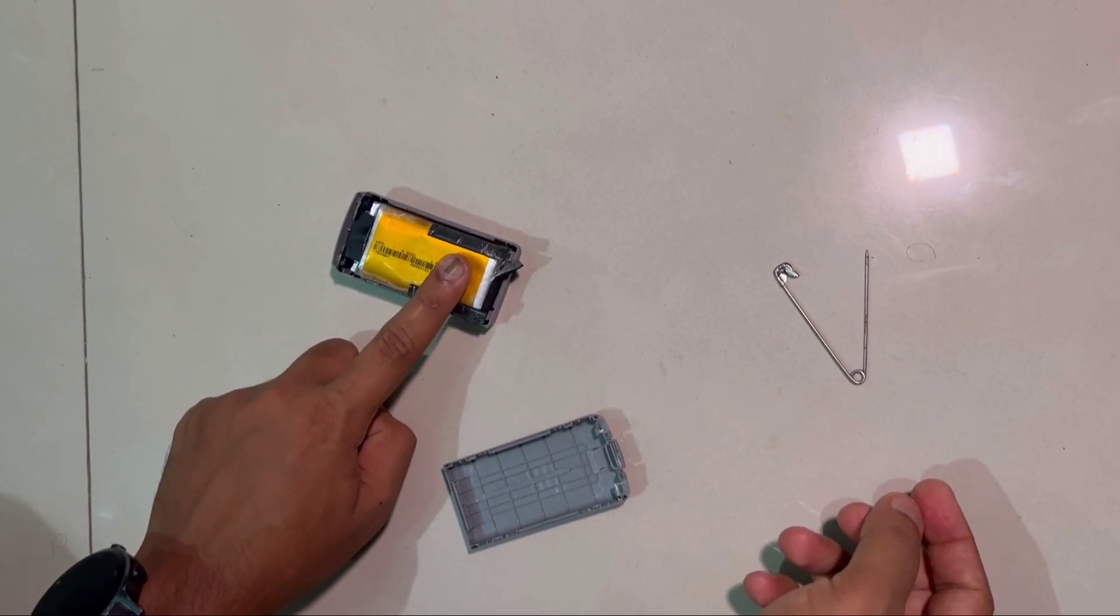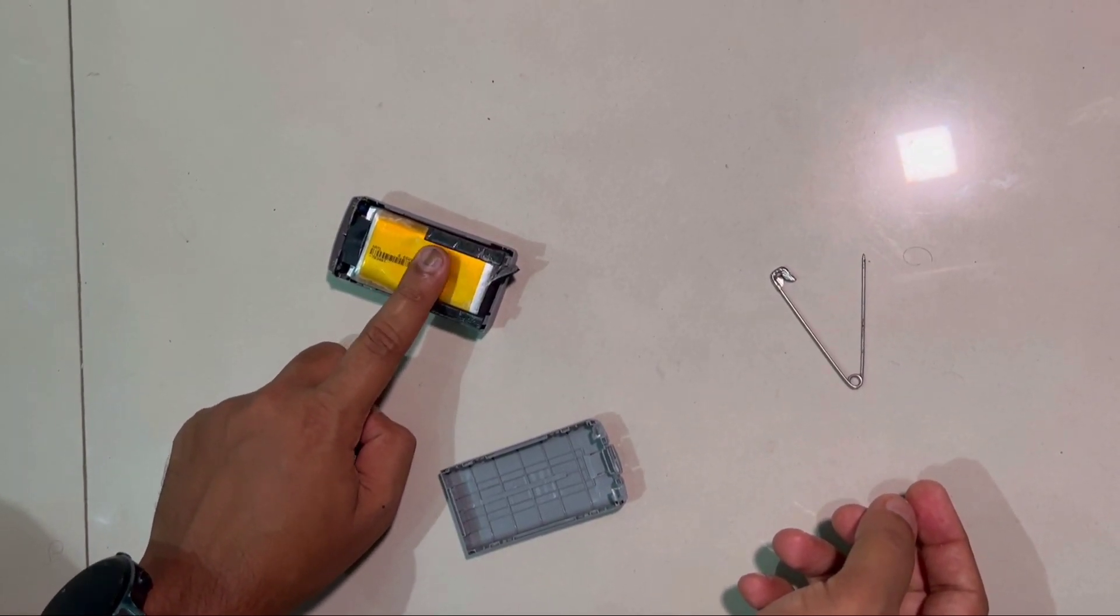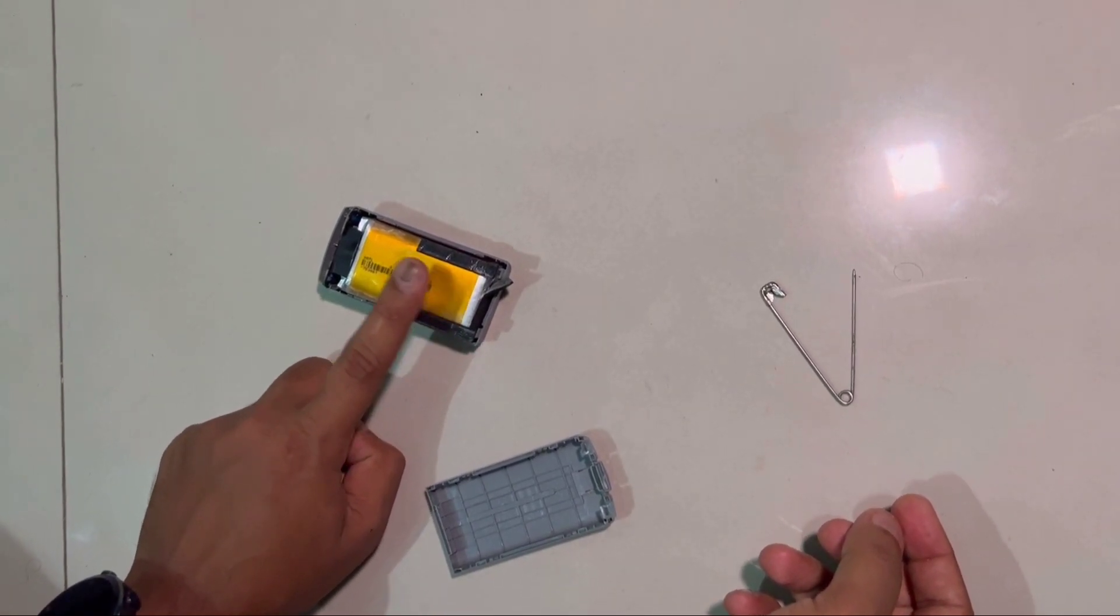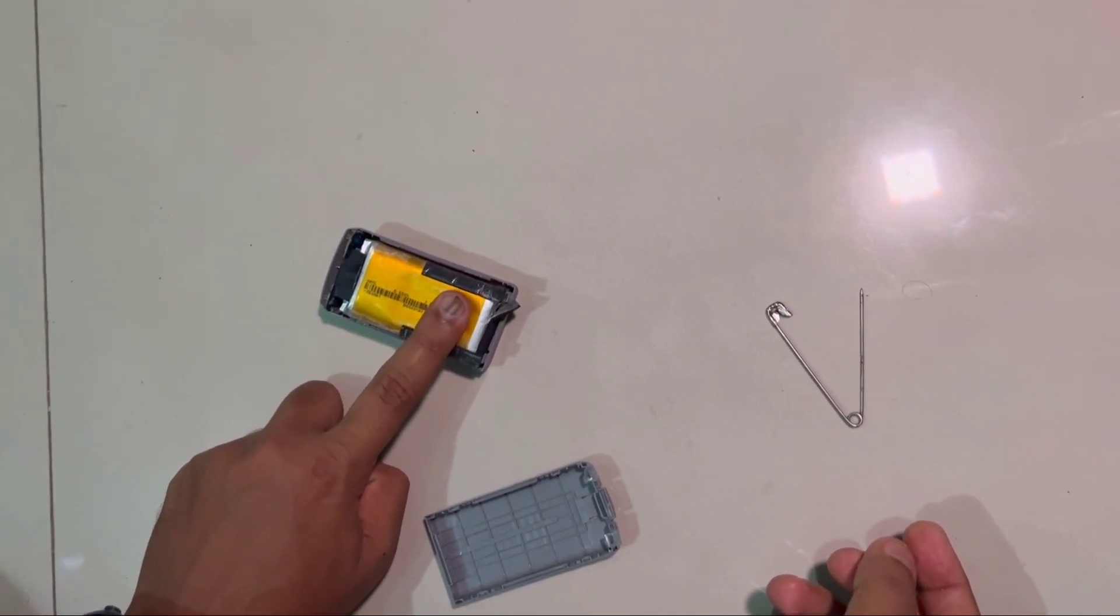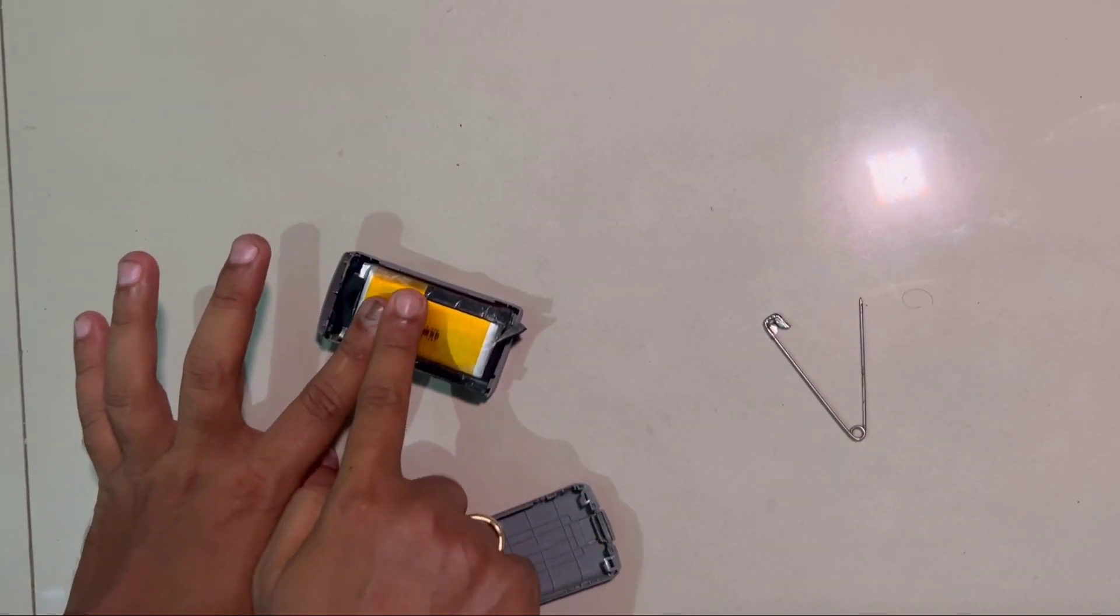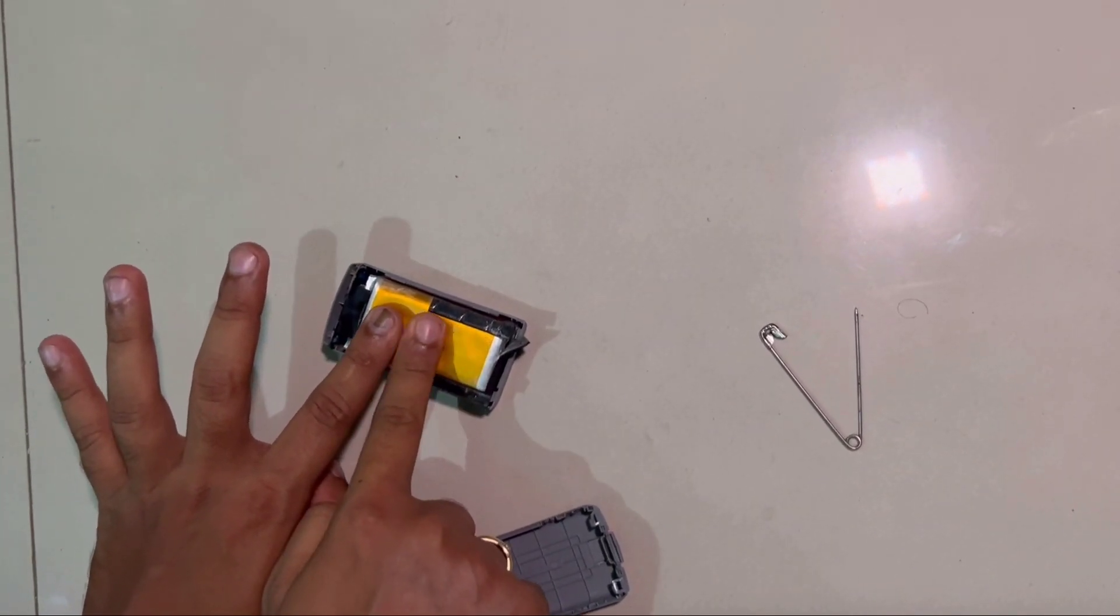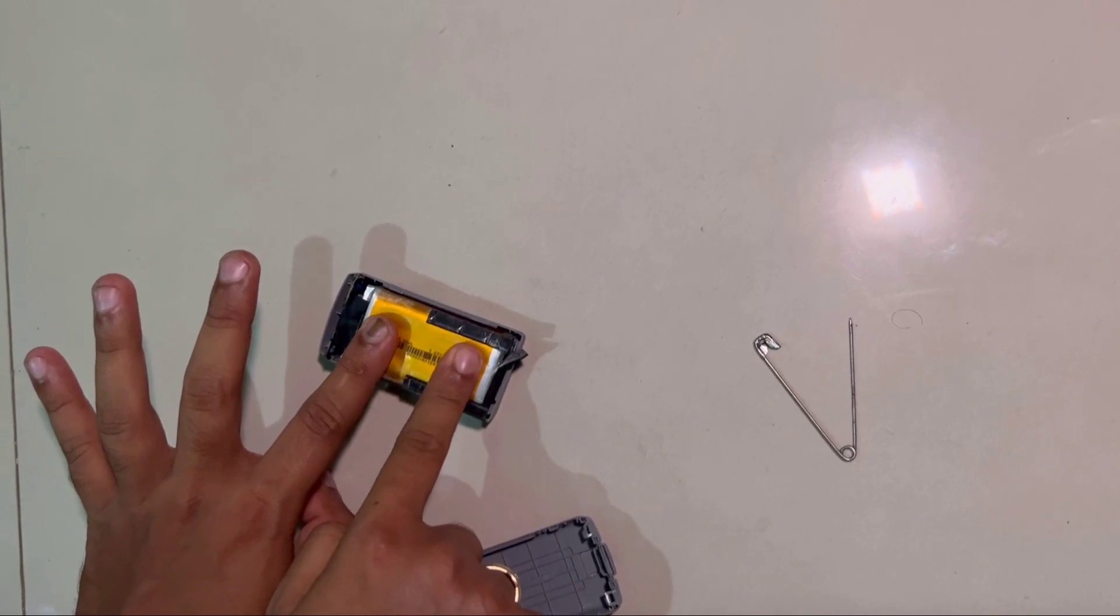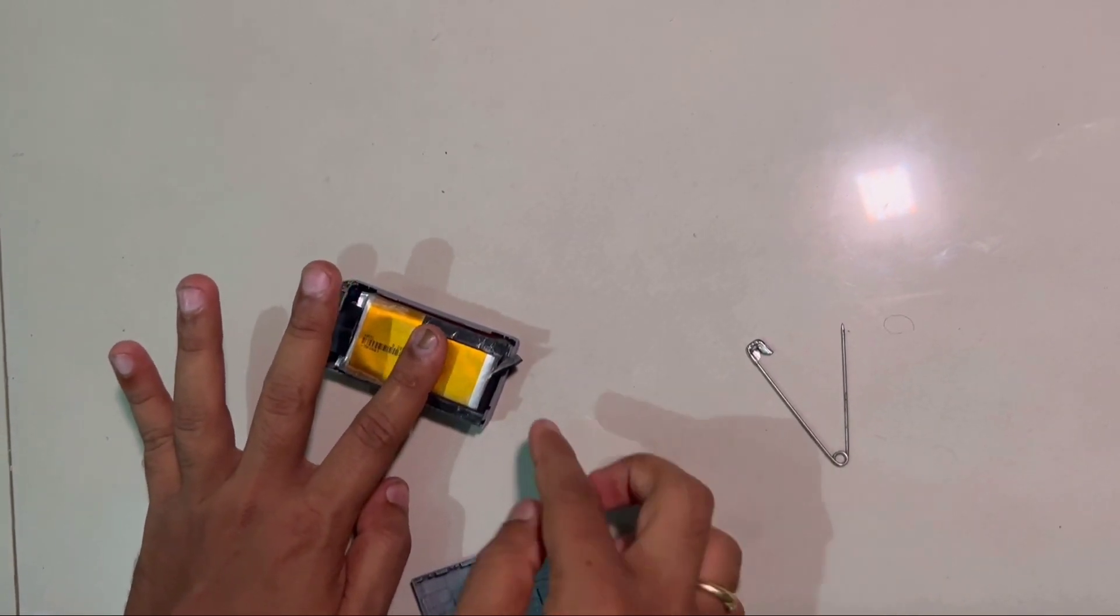When flying the drone, it will show battery at 100% and abruptly drop to 20%, 15%, or even 0%, and your drone may crash. Ensure you're only puncturing one of the two cells in the battery.